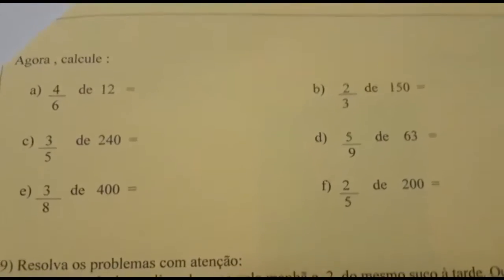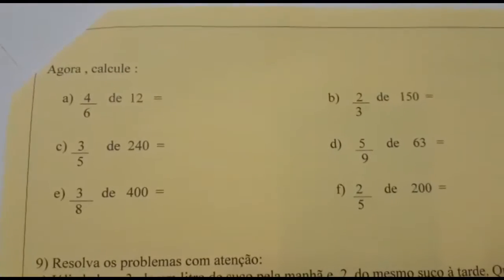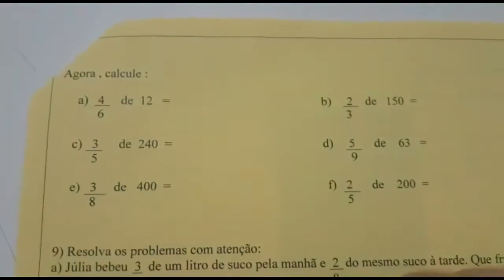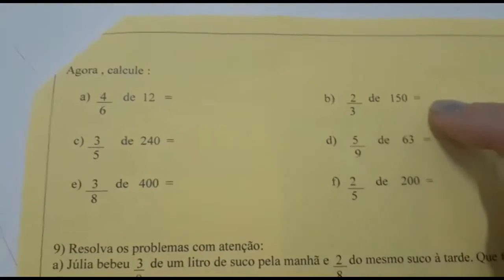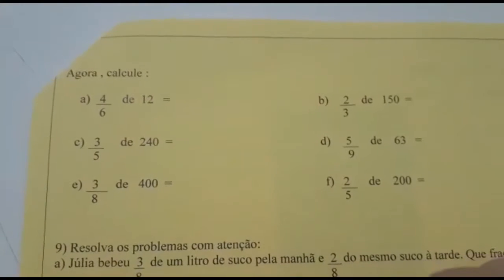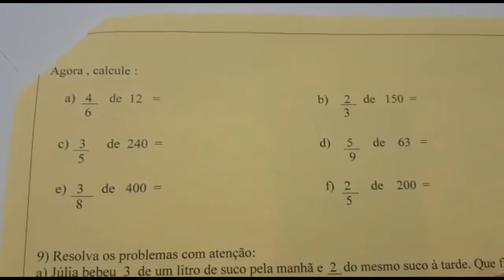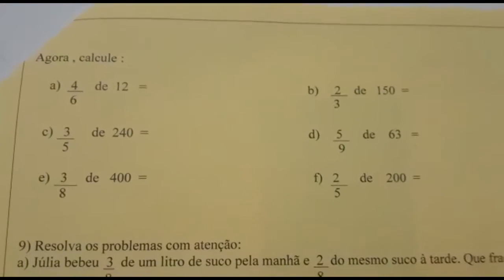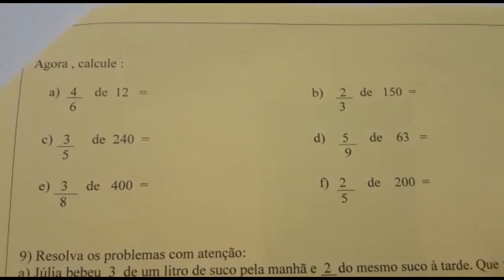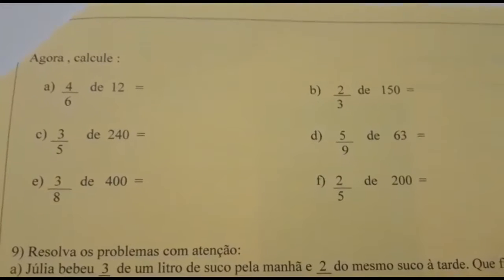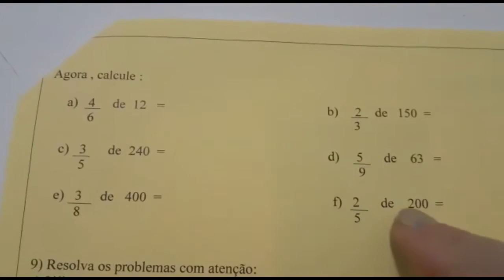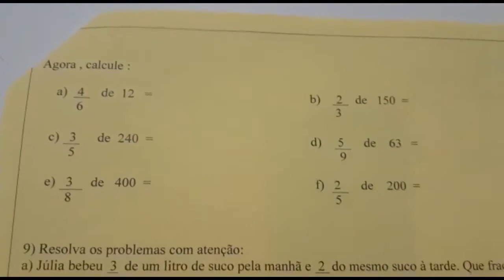Agora, calcule. Letra A: 4 sextos de 12. Letra B: 2 terços de 150. Letra C: 3 quintos de 240. Letra D: 5 nonos de 63. Letra E: 3 oitavos de 400. Letra F: 2 quintos de 200.